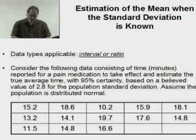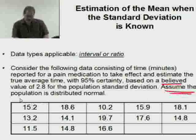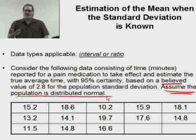Let's jump in with an example. Consider the following data consisting of time in minutes reported for a pain medication to take effect, and estimate the true average time with 95% certainty based on a believed value of 2.8 for the population standard deviation. Assume the population is distributed normal. If I were you, I'd pause the presentation, get those data values into your calculator so you can work through this example with me.